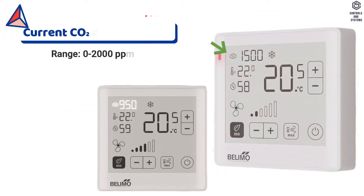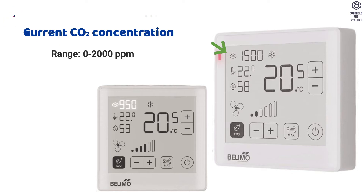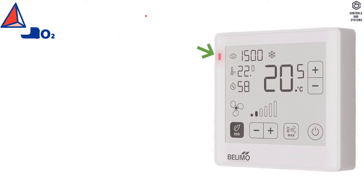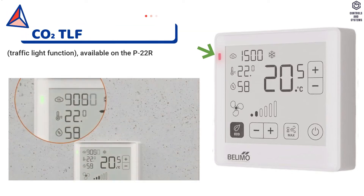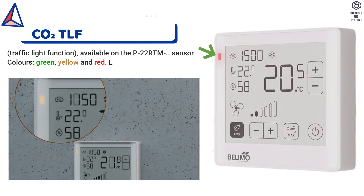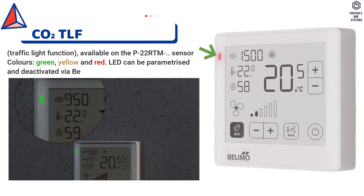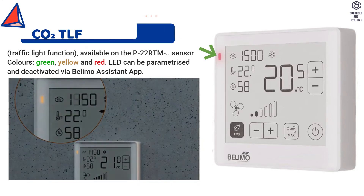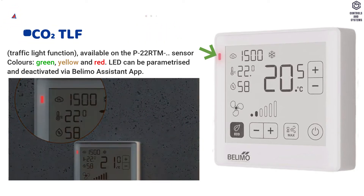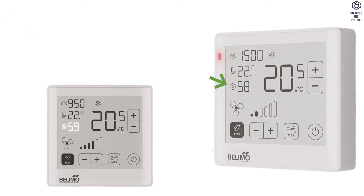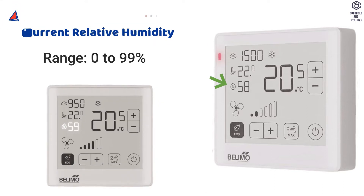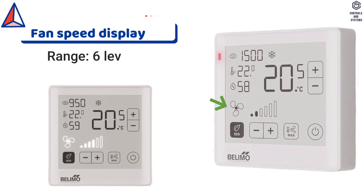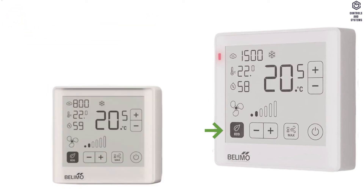Indicator 1: Current CO2 concentration. Indicator 2: CO2 TLF — traffic light function — available on the P22RTM sensor; colors are green, yellow, and red. Indicator 3: Current temperature. Indicator 4: Current relative humidity. Indicator 5: Fan speed display for 6 levels.